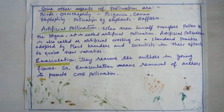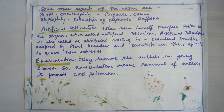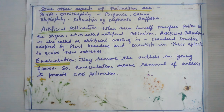Artificial pollination is also called artificial crossing or hybridization, and it is a standard practice adopted by plant breeders and scientists to evolve new varieties. They remove the anthers from young flowers — a process called emasculation — and then cover those flowers with plastic bags, which is called bagging. Later, they pollinate these flowers with pollen from plants of a desired variety to obtain new, viable, and strong varieties.